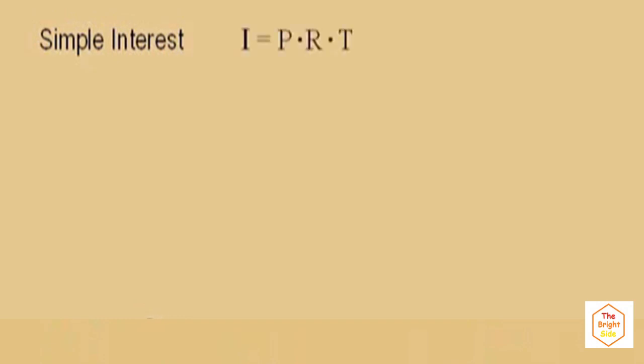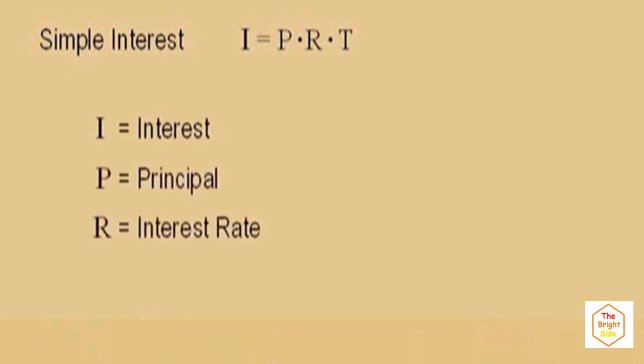Some people call this formula PERT. That's because I equals PRT, where I is the interest, P is the principal, R is the interest rate, and T is the time in years.